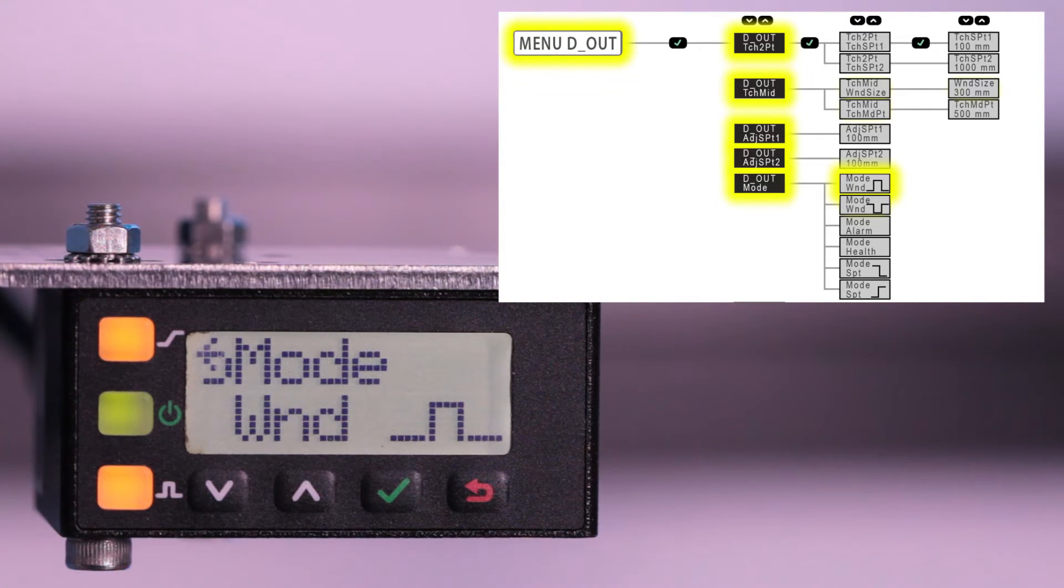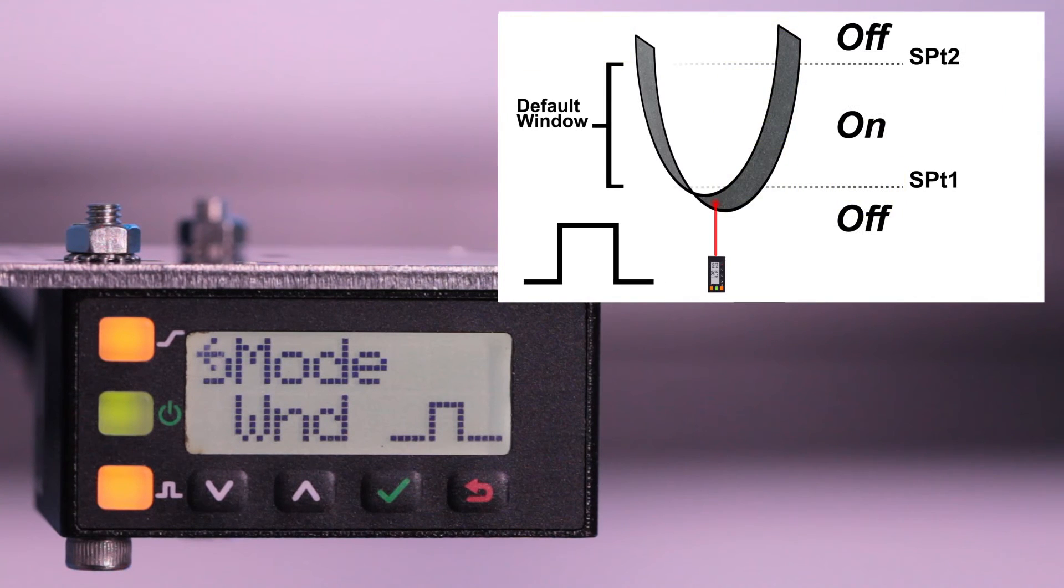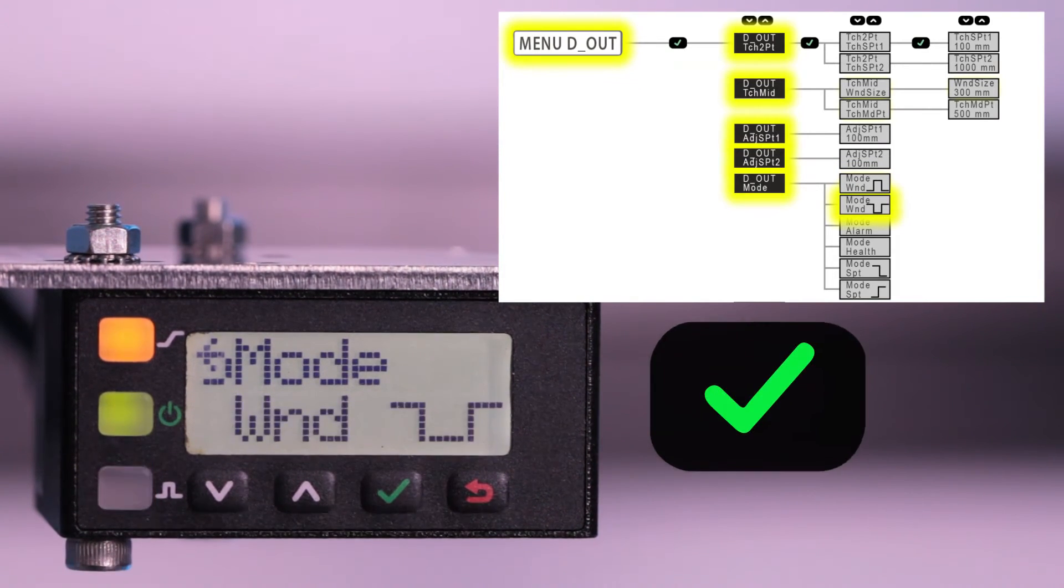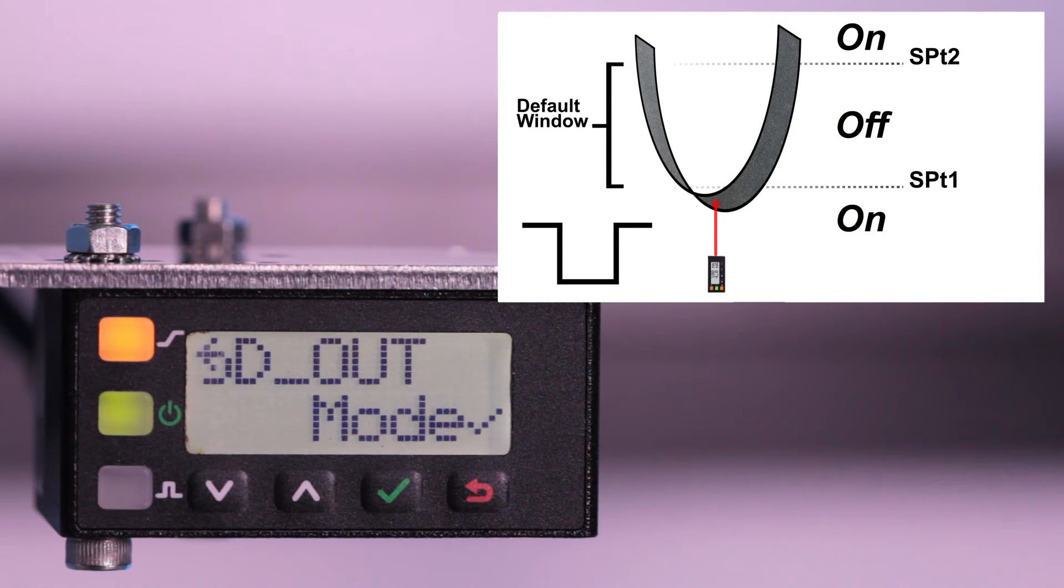The default discrete output setting is a normally closed window from 100mm to 1000mm. The window can be changed to normally open so that the output is on if the target is not present or outside the taught window.